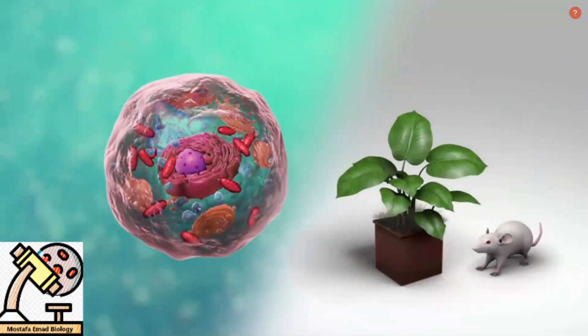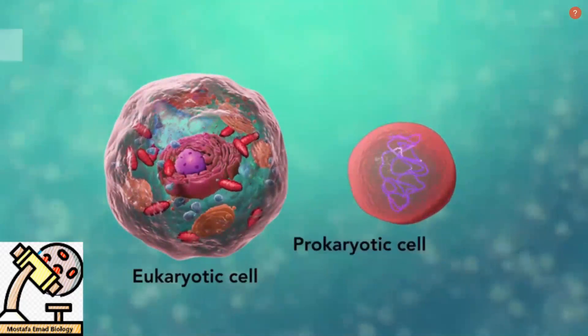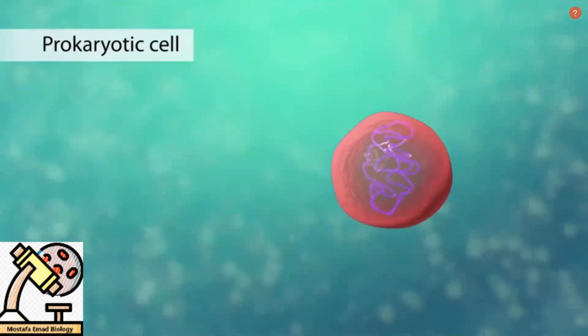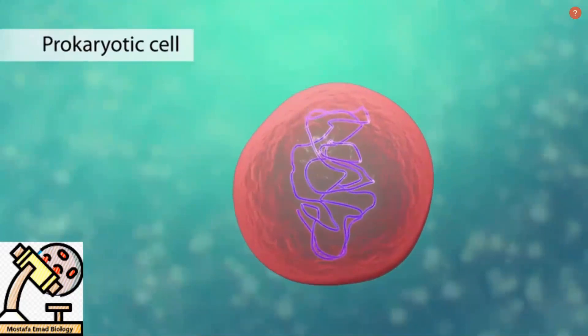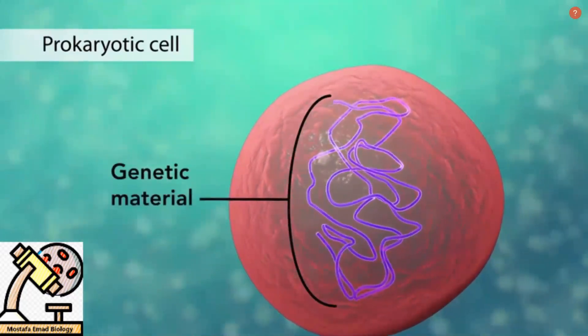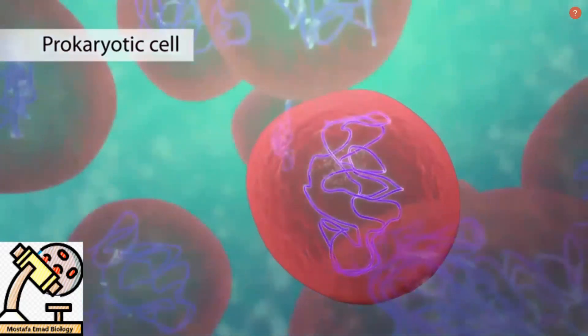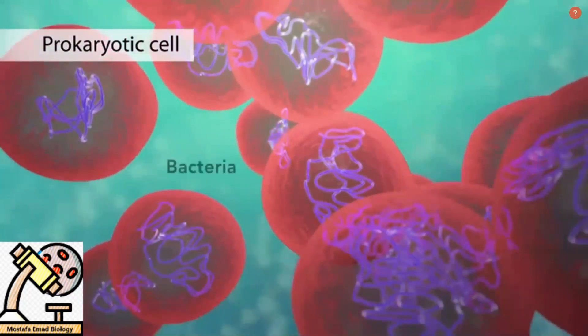The second category is prokaryotic cells. They don't have a nucleus or membrane-enclosed organelles. They do have genetic material, but it's not contained within a nucleus. Prokaryotic cells are always one cell or unicellular organisms, such as bacteria.